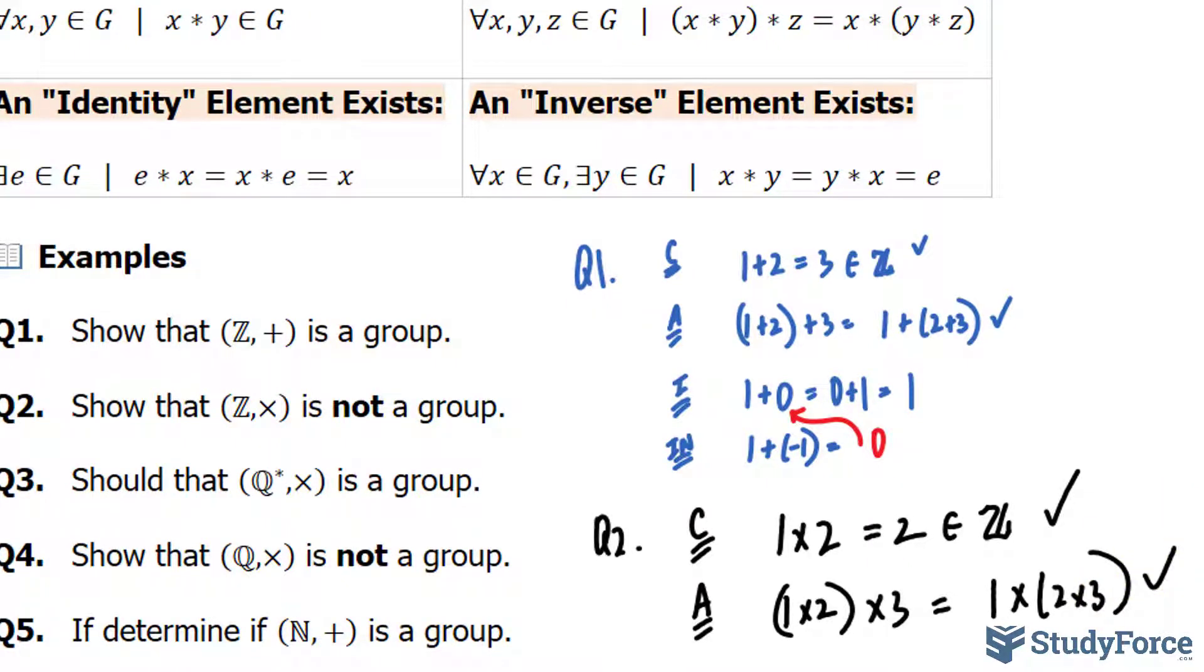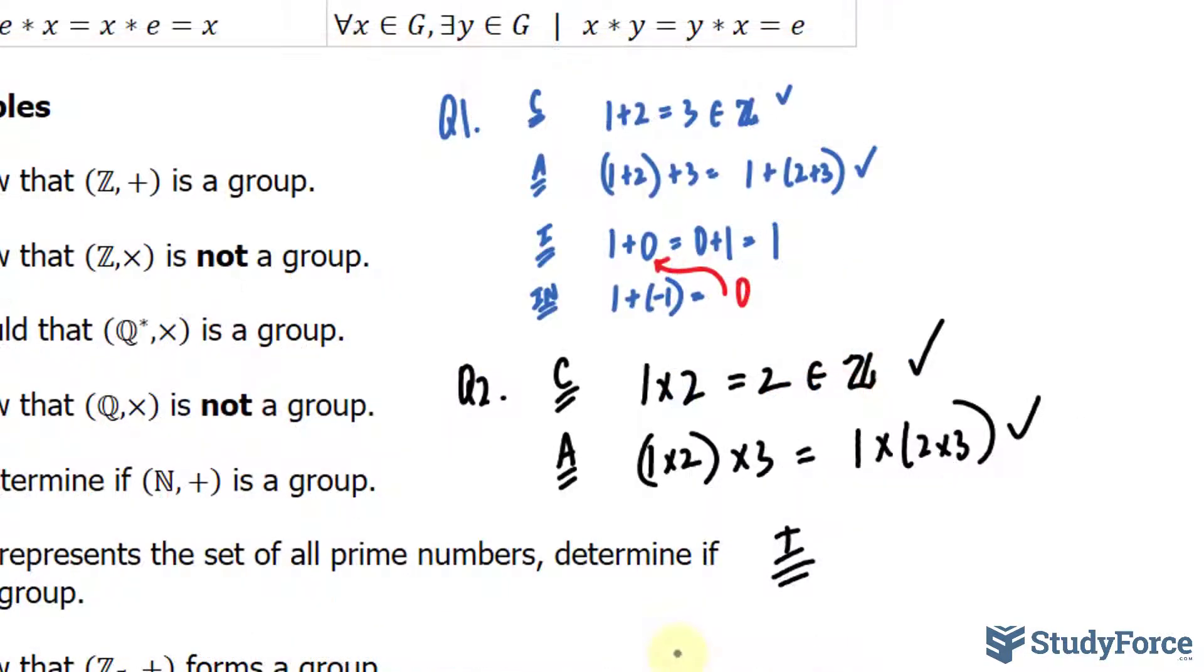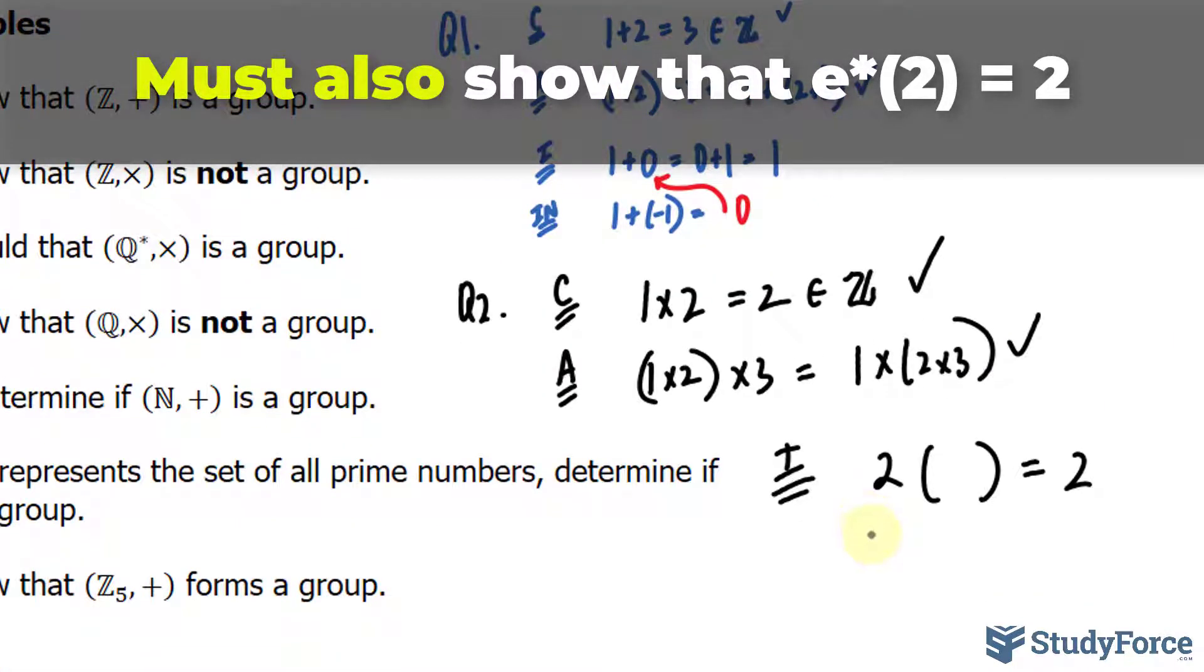The next test is to see if an identity exists. Let's pick element 2. We want to multiply 2 by something, the identity, such that we get 2 back. That number has to be 1. So an identity does exist. It is 1. That is a pass.